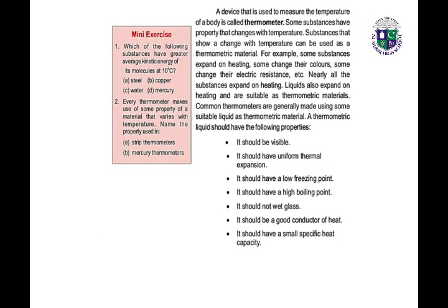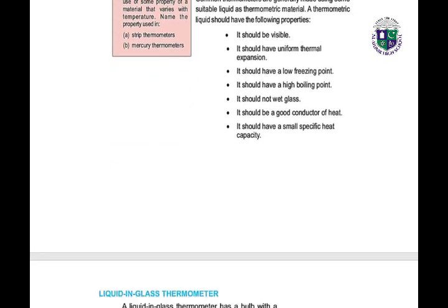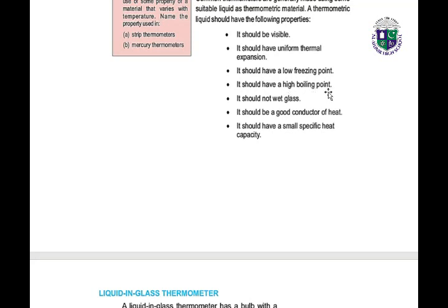A thermometric liquid should have the following properties: it should be visible, should have uniform thermal expansion, have a low freezing point, a high boiling point, should not wet glass, should be a good conductor of heat, and should have a small specific heat capacity.